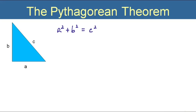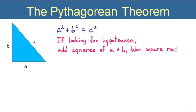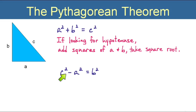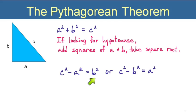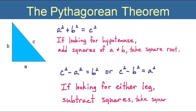Now, here's the Pythagorean Theorem. So if I'm looking for the hypotenuse, what I want to do is add together the squares of the two sides and put the answer under a radical. If you're looking for the hypotenuse, add the squares of a and b and take the square root. But if you are looking for a leg — say we want to solve for b squared — then you subtract a squared from both sides: c squared minus a squared equals b squared. Or for a squared: c squared minus b squared equals a squared. So if you're looking for one of the legs, you want to subtract the squares and put the answer under a radical.